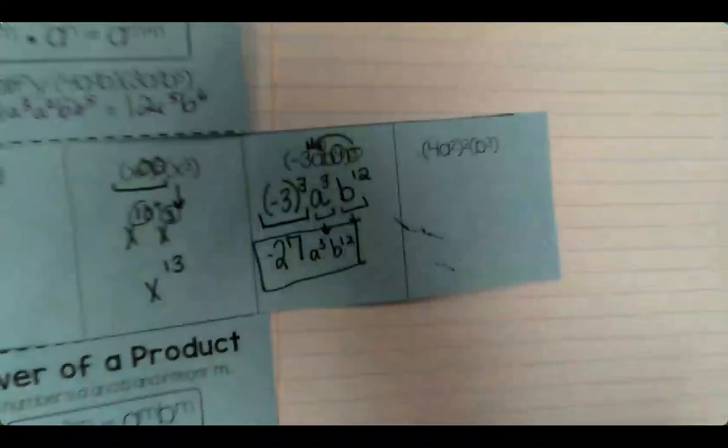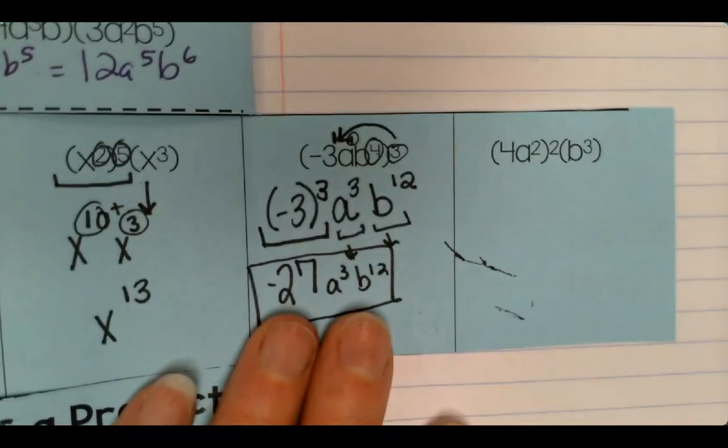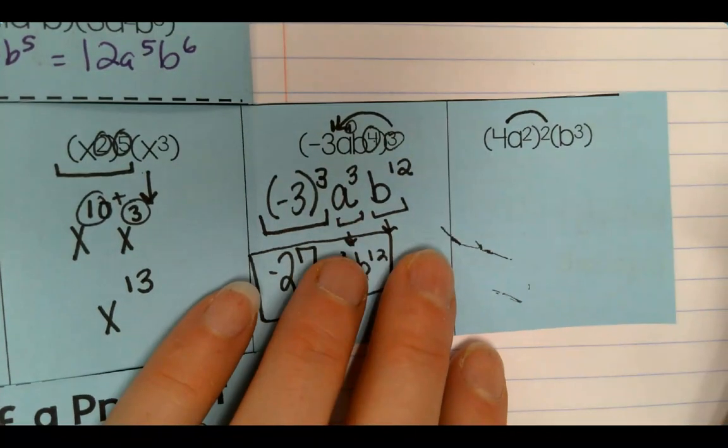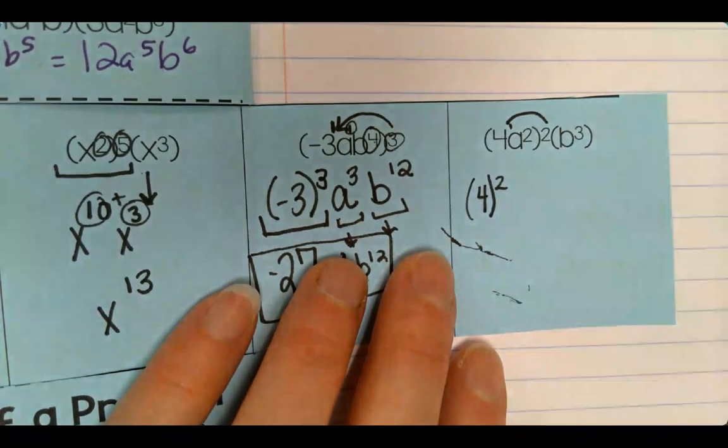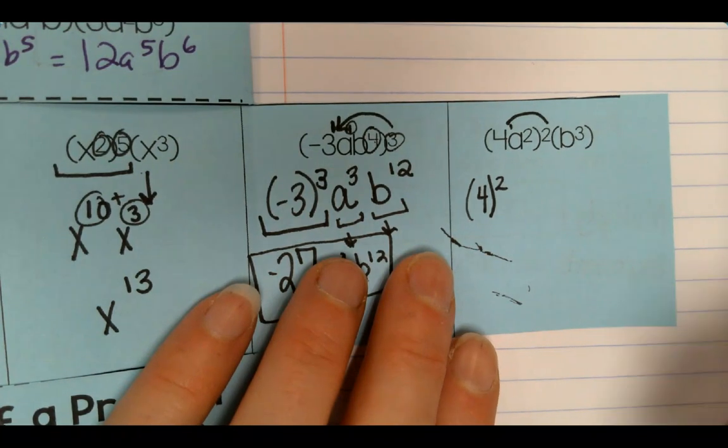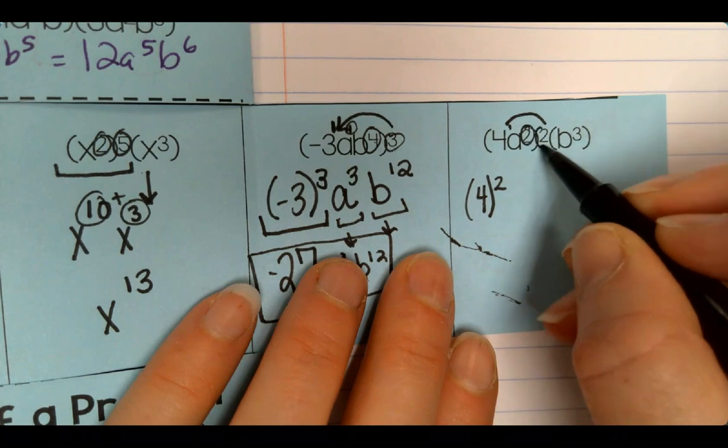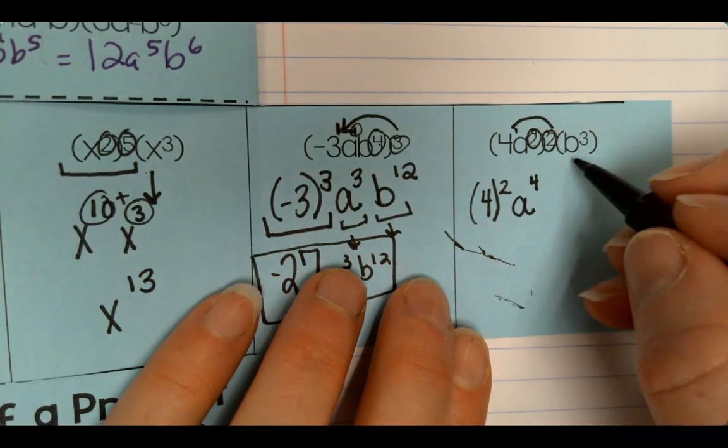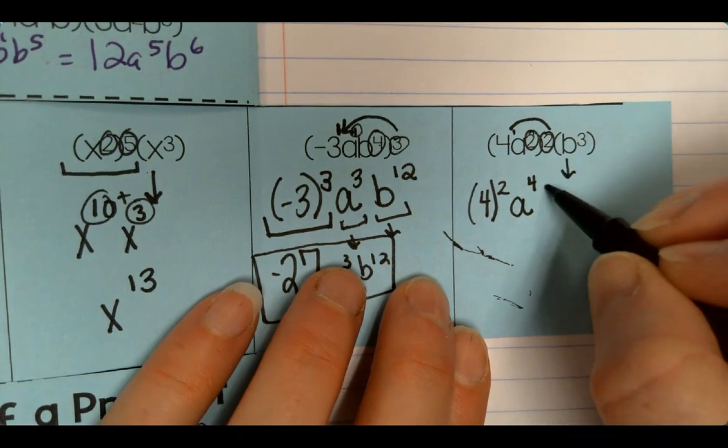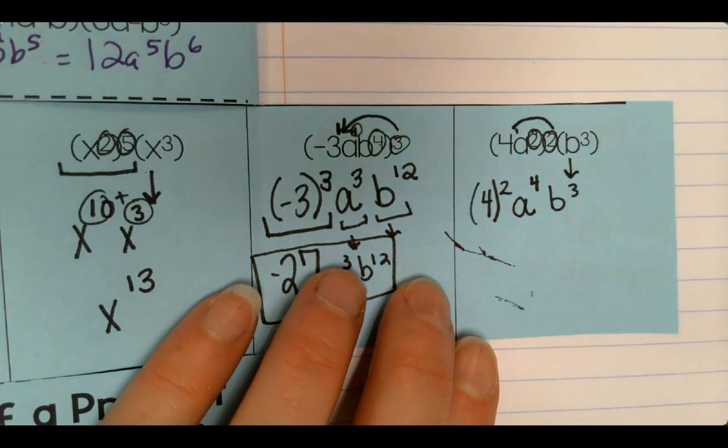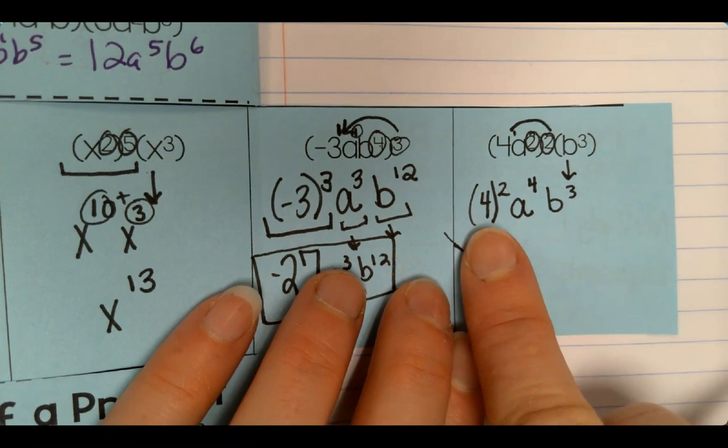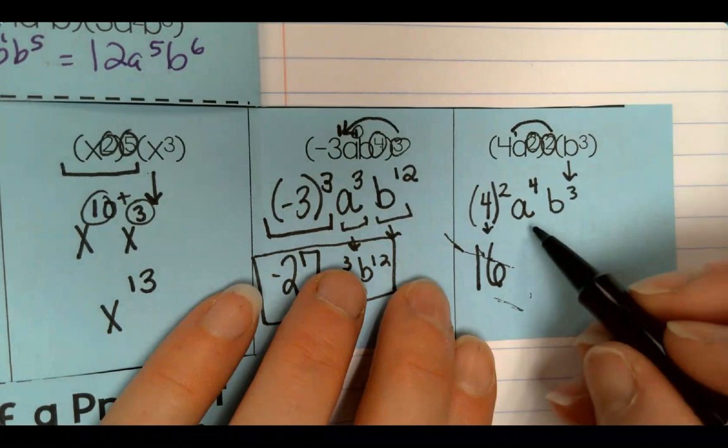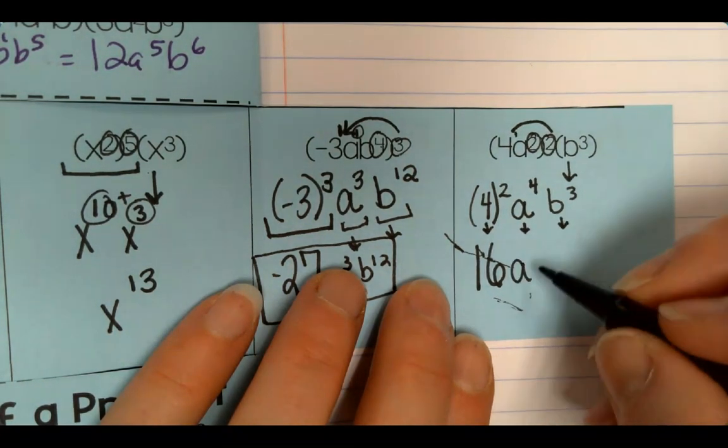All right. Let's go ahead and do the next one. 4, a squared, squared, b cubed. So we've got to send this exponent in. So right now it's a 4 to the first power. So now it's going to become 4 to the second power. Keep it in parenthesis. And then a squared, we multiply our exponents. So it's a to the 2 times 2, 4. And then b cubed, it doesn't have any exponent out here. So we're just going to carry it down. So now do 4 squared. That's 4 times 4, 16. And then these guys, they don't have any change to them. So it's a to the 4, b to the 3.